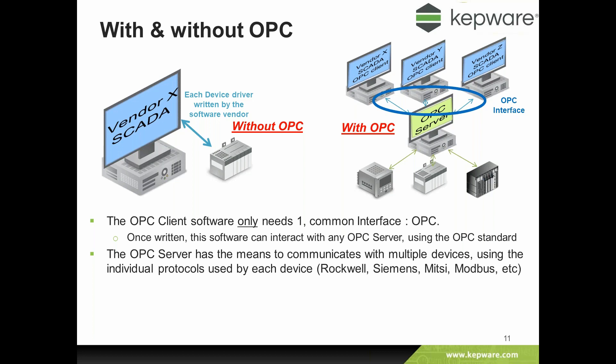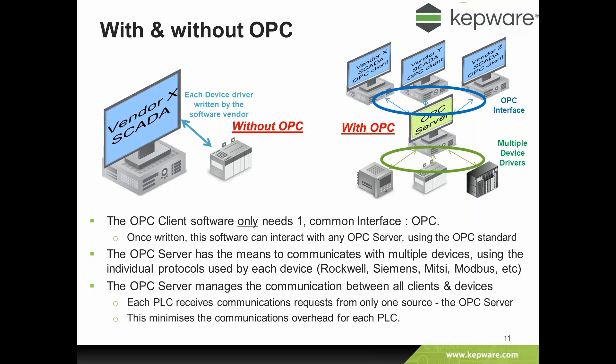The OPC server manufacturers need to continually update their server products to keep track of different changes and new models launched onto the market. That means a single OPC server can communicate to many different types of devices — in the PLC world, for example, talking to Rockwell, Siemens, Mitsubishi, Modbus, Omron, and many other vendors all within the same OPC package. The OPC server manages communications on one side to SCADA or OPC client applications, and on the other side down to each device, so an individual device only sees requests from a single point — the OPC server — minimizing comms across the network.